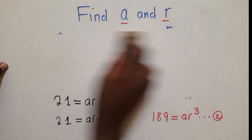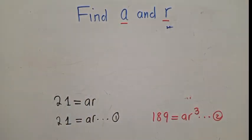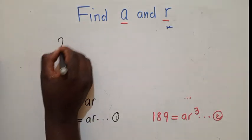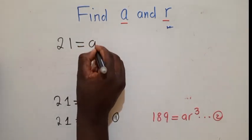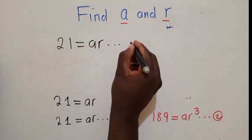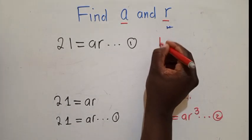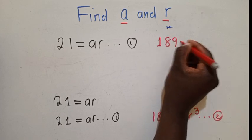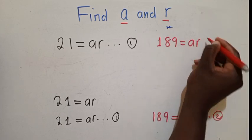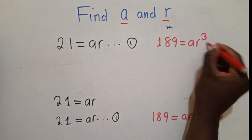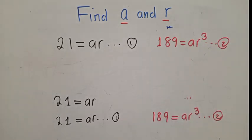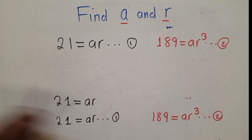Let me copy the equations. I'm just copying, not doing any calculation here. I'm running out of space. So it will be 21 equals ar. This is our equation 1. The next equation is 189 equals ar to the power 3. This is equation 2.